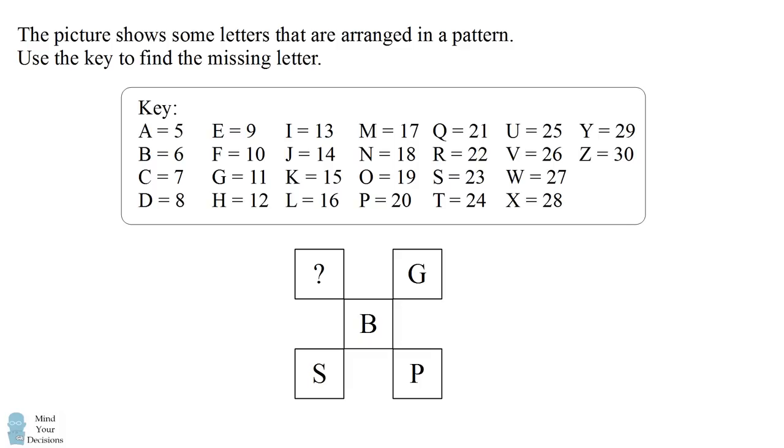The key is a conversion from letters to numerical values. A is equal to 5, B is equal to 6, C is equal to 7, and so on where each letter is equal to the next number, going all the way to Z equaling 30.